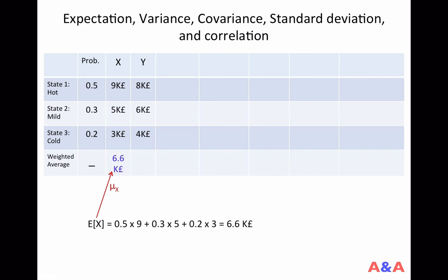The expected value is also called mean. So you can also use Greek letter mu to denote the mean of X. So mu sub X is the mean of X, but it's the same thing as E[X].